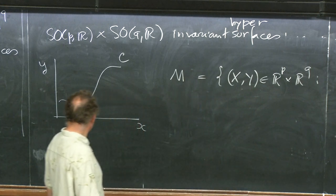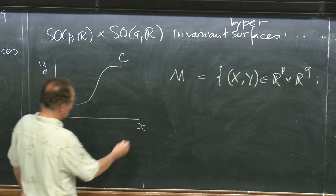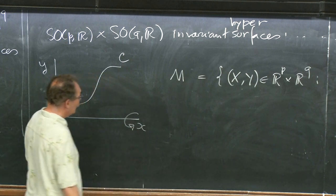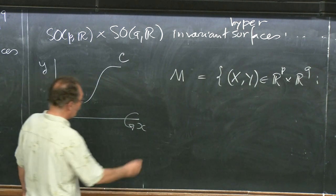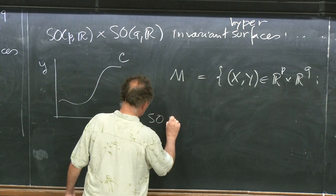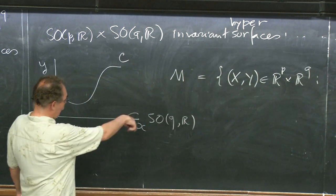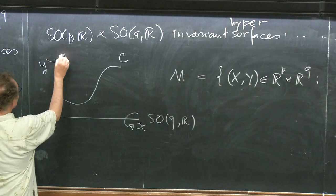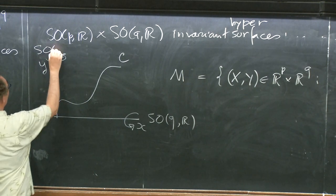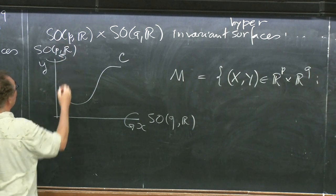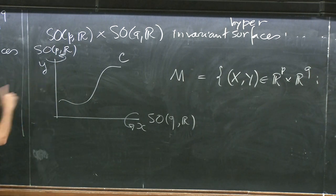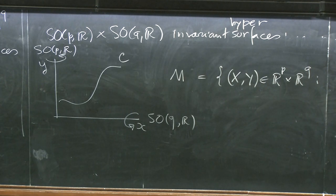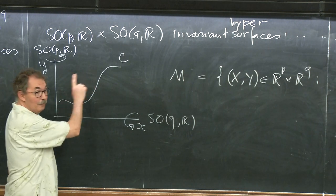The idea is that you take curve C and swing it around the axis in Q dimensions using group SOQ, and also swing it around the axis in P dimensions, giving a hypersurface in Rp cross Rq that is completely determined by this curve.